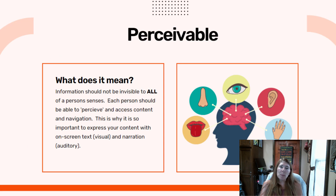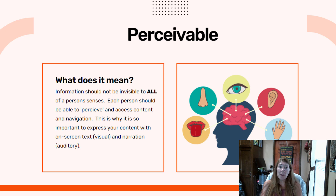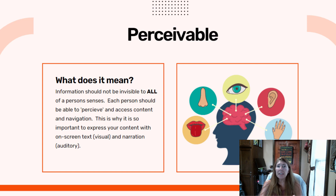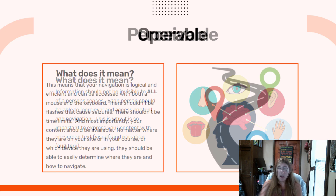Perceivable means that your content should be available to multiple senses. If a person is blind, then they should be able to use another sense to learn about the content. Generally, perceivable means your content can be read, seen, and heard.